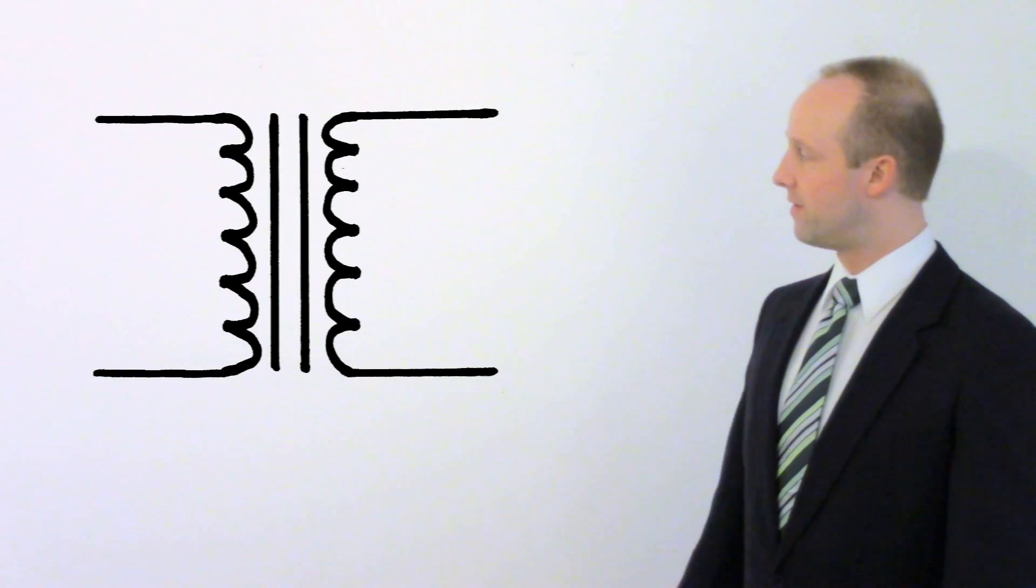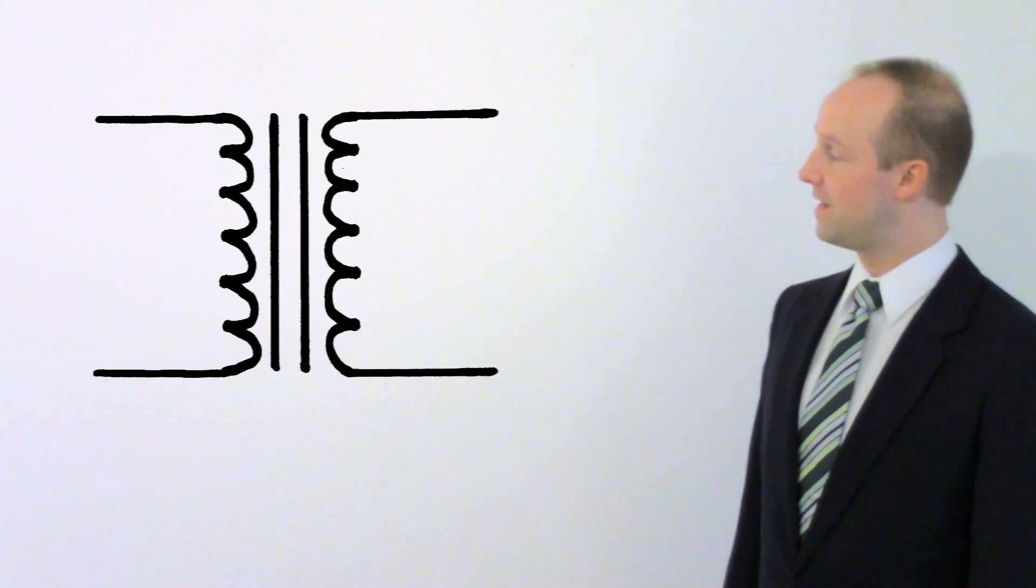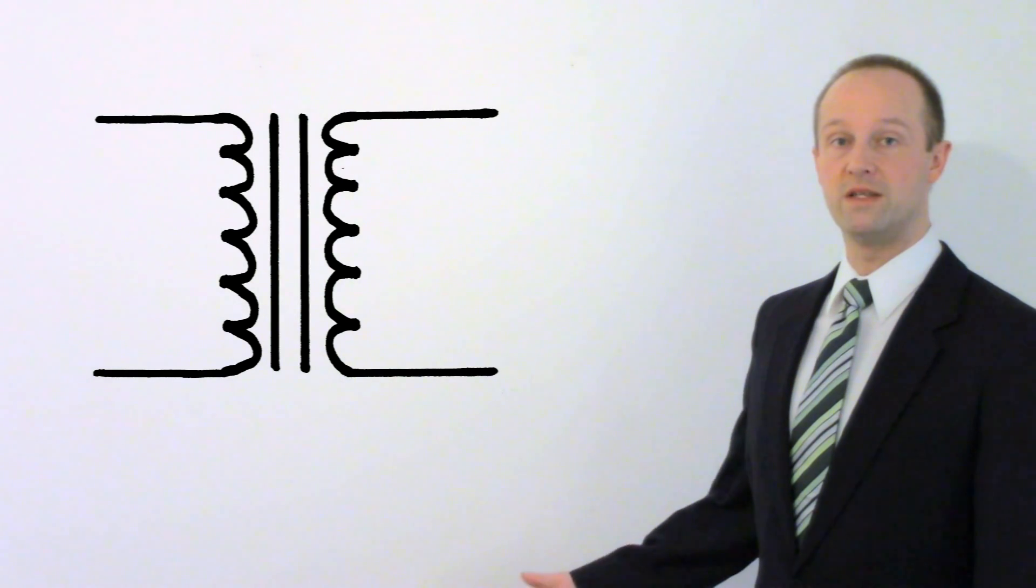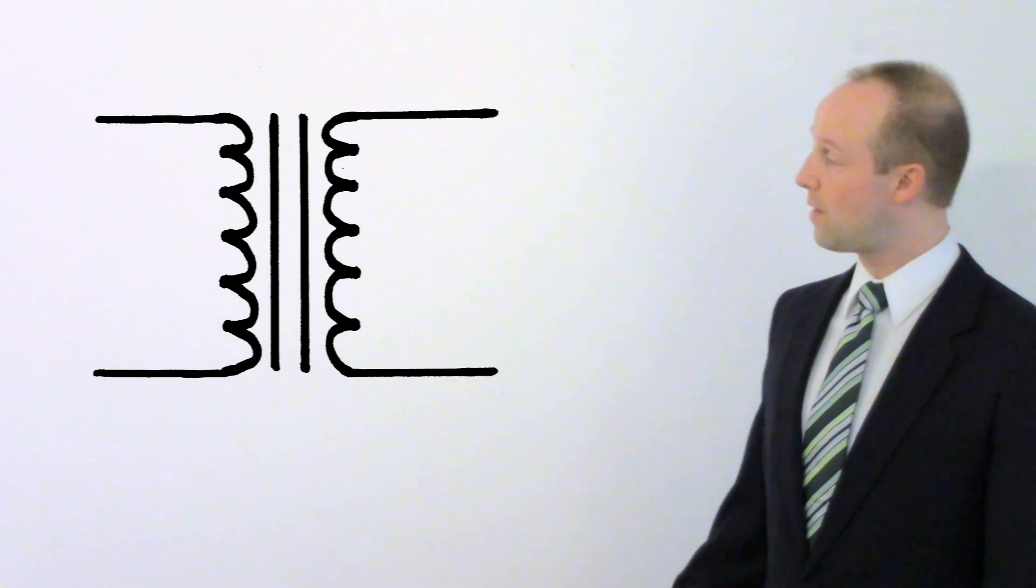All we've got to do is put another coil next to this constantly changing electromagnet and we will induce a current in it and so that's exactly what we do do. In fact the symbol for a transformer actually represents this.